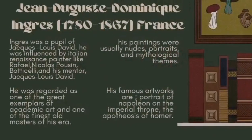Jean-Auguste-Dominique Ingres was a pupil of Jacques-Louis David. He was influenced by Italian Renaissance painters like Raphael, Nicolas Poussin, Botticelli, and his mentor Jacques-Louis David. He was regarded as one of the great exemplars of academic art and one of the finest old masters of his era. His paintings were usually nudes, portraits, and mythological themes. His famous artworks are Portrait of Napoleon on the Imperial Throne and Apotheosis of Homer.